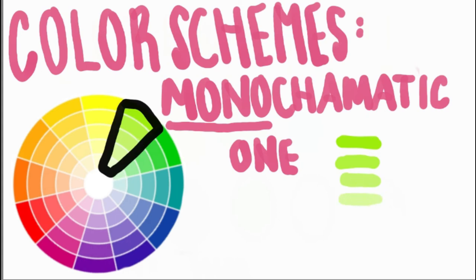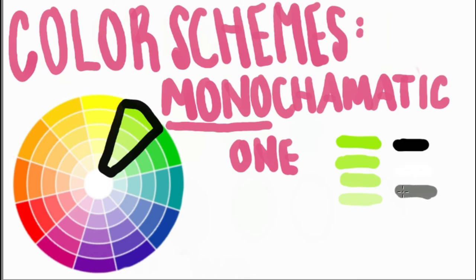The monochromatic color scheme is used by using only one hue and adding white, gray, or black to make tints, shades, and tones. Usually you mix white, gray, and black when you are painting.